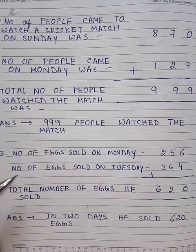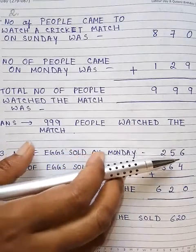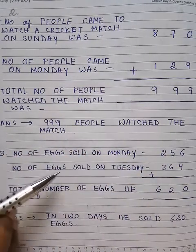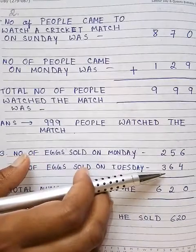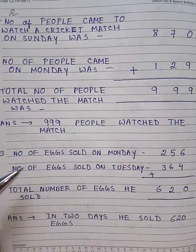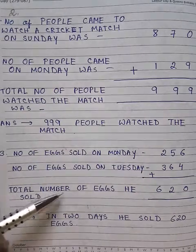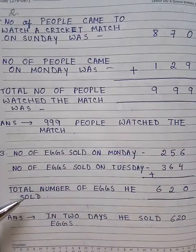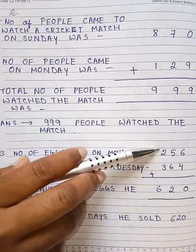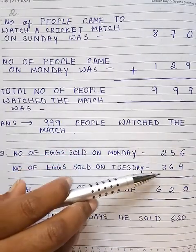First we are writing: number of eggs sold on Monday was 256. Next, number of eggs sold on Tuesday was 364. Our question is how many eggs did he sell in two days — that means the total number of eggs he sold. Total number of eggs means we are adding these two numbers: 256 plus 364.